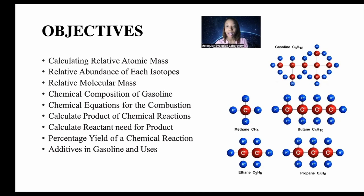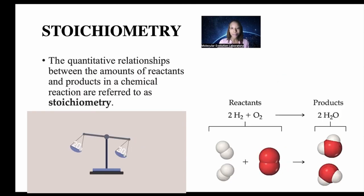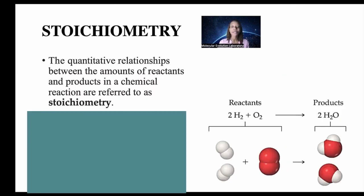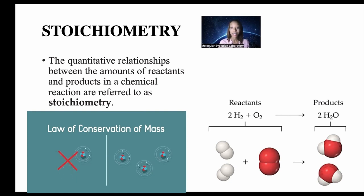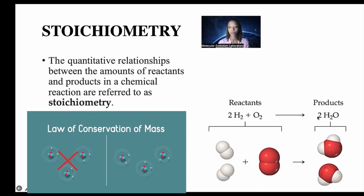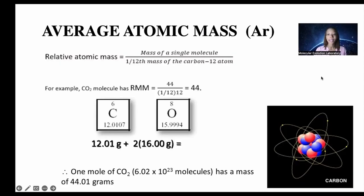Stoichiometry refers to the relative relationship between the amounts of reactants and products in a chemical reaction — basically giving a quantitative value of products and reactants. For example, two hydrogen atoms react with two oxygen molecules to give two water molecules. The relative atomic mass is basically the mass of a single atom divided by one-twelfth of the mass of carbon. For example, the carbon dioxide molecule has a relative atomic mass of 44.